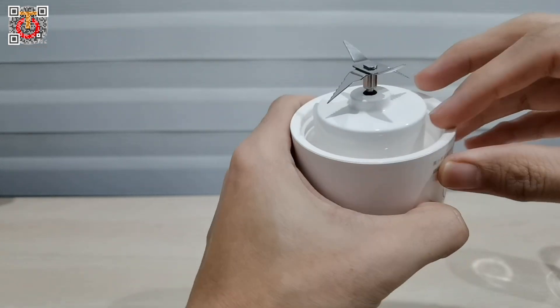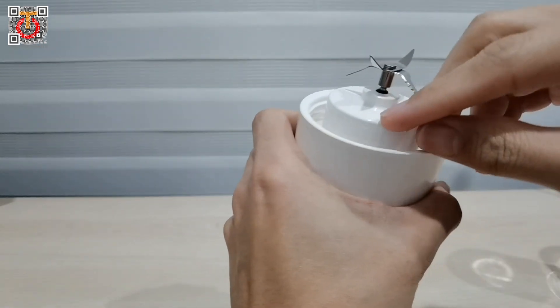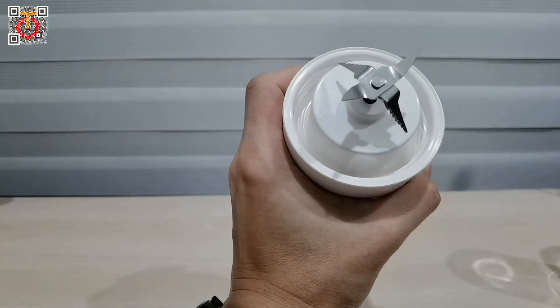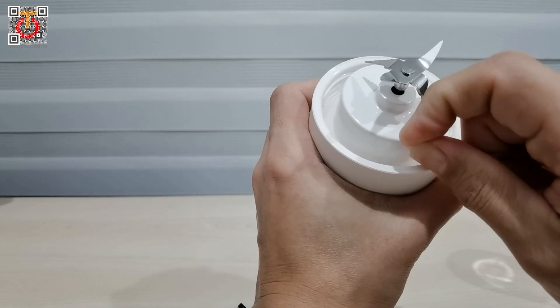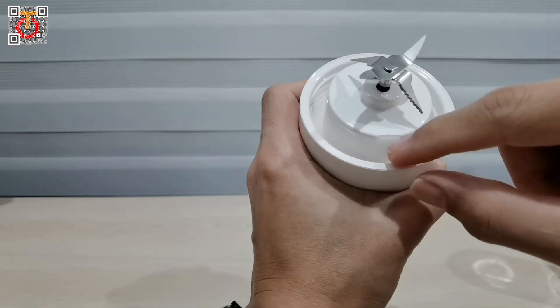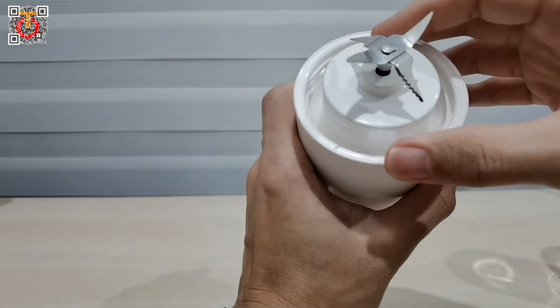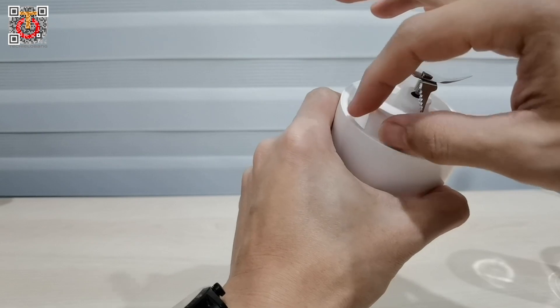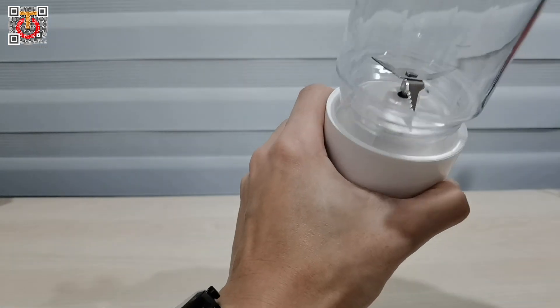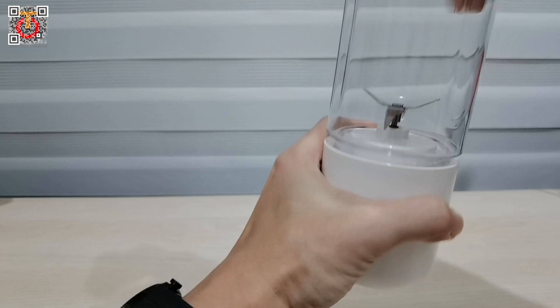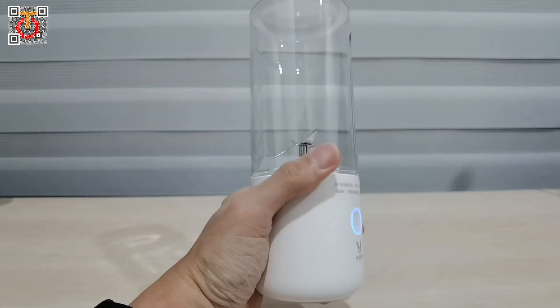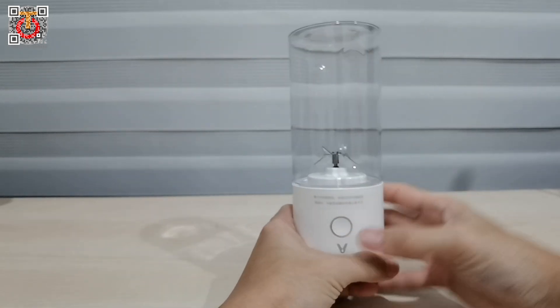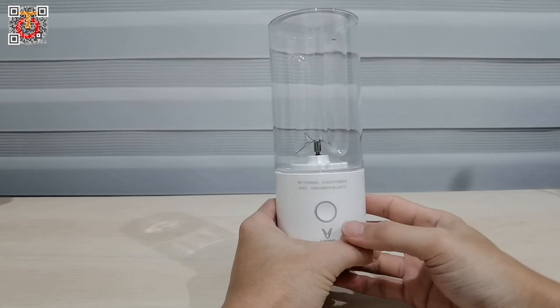And basically that's it, very simple design. Maybe you want to look inside - it's a very simple design. This is a protection over here. I don't think I can take it out, or I don't want to take it out because it's supposed to be segregating the motor from the container.